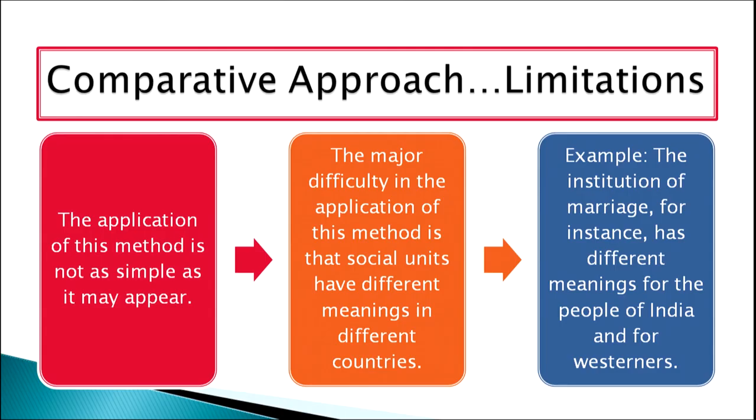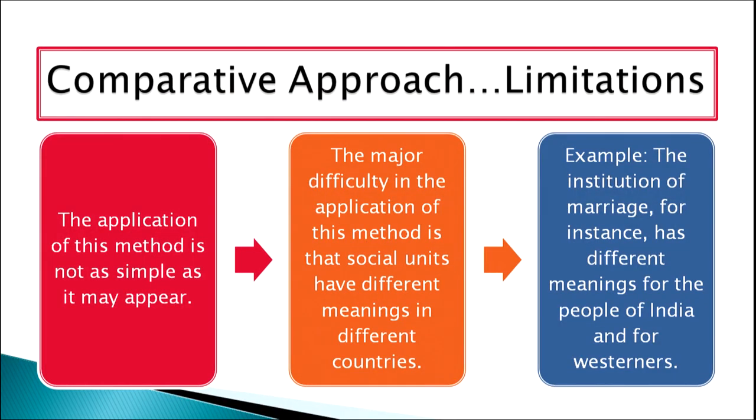Comparability of data is a major issue and missing data may also be a problem in the comparative approach. The application of this method is not as simple as it may appear. The major difficulty is that social units have different meanings in different countries — cultural similarities vary across parts of a country and across countries. For example, the institution of marriage has different meanings for people of India and for people in the West.